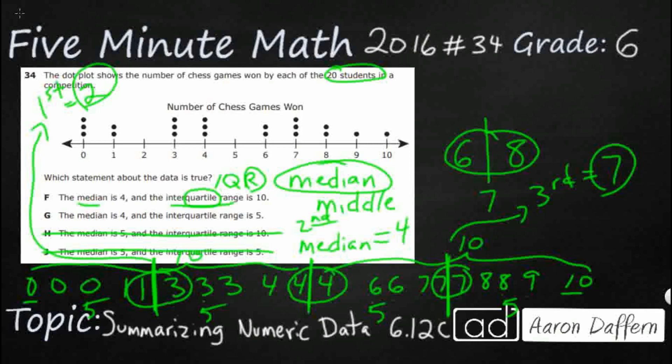The interquartile range is the difference between the third minus the first quartile. Seven minus two gives me five. My interquartile range is five, and my answer is G. F is incorrect because that's the actual range, not the interquartile range.